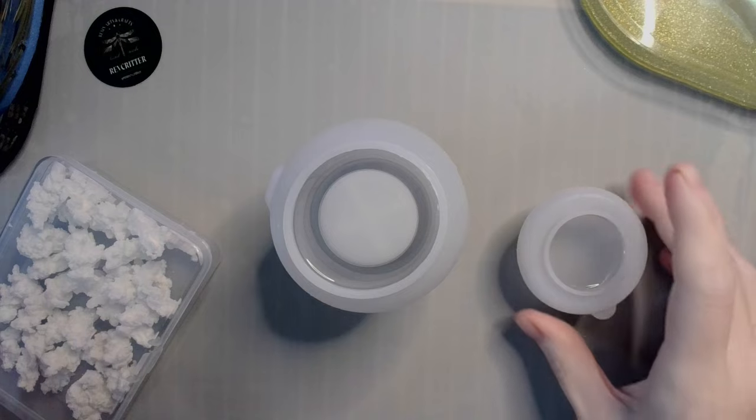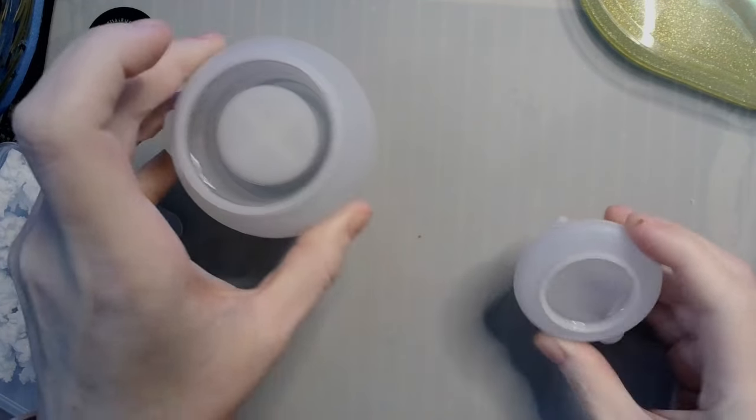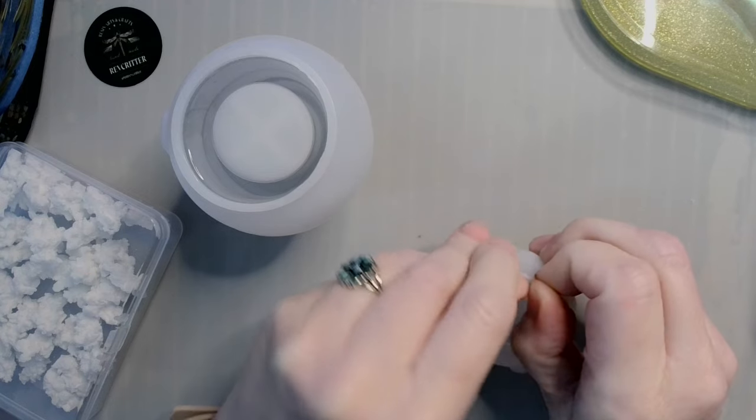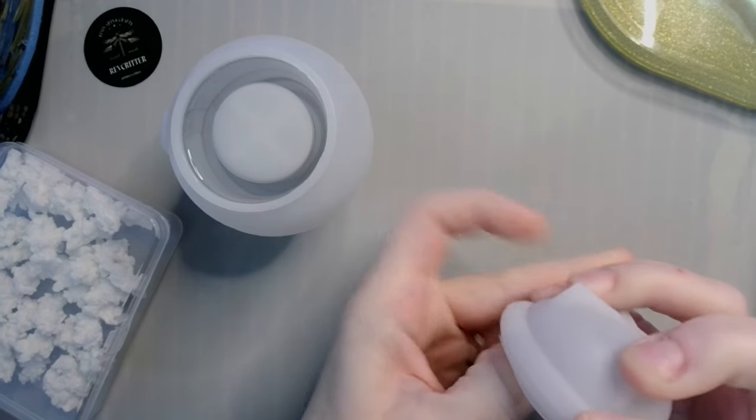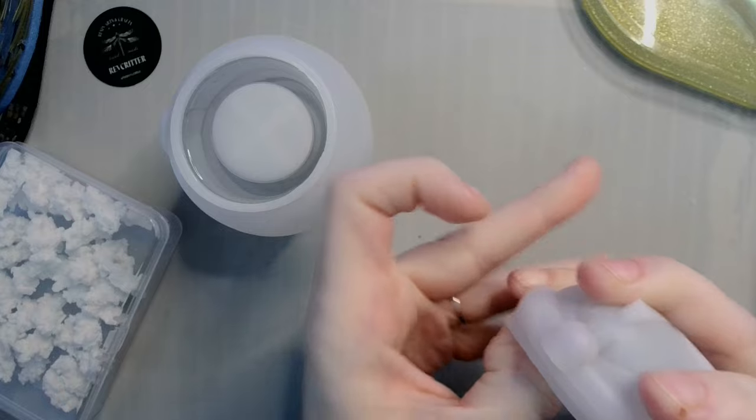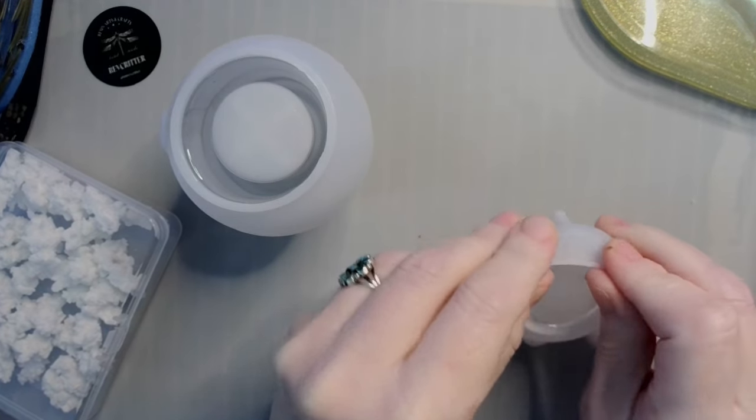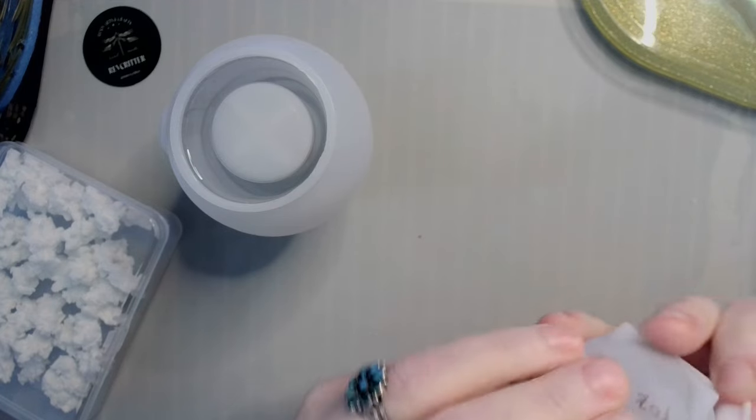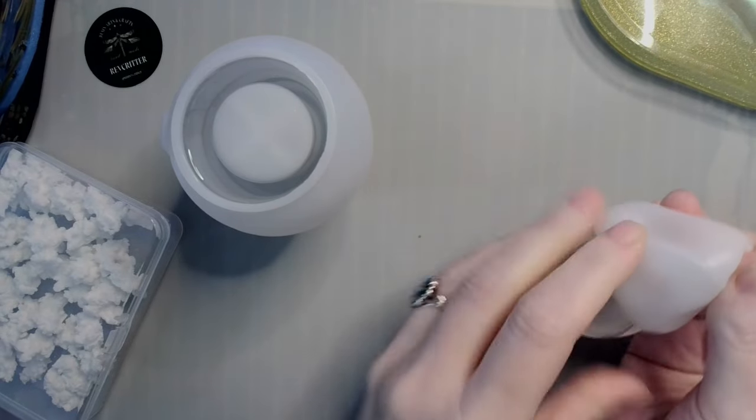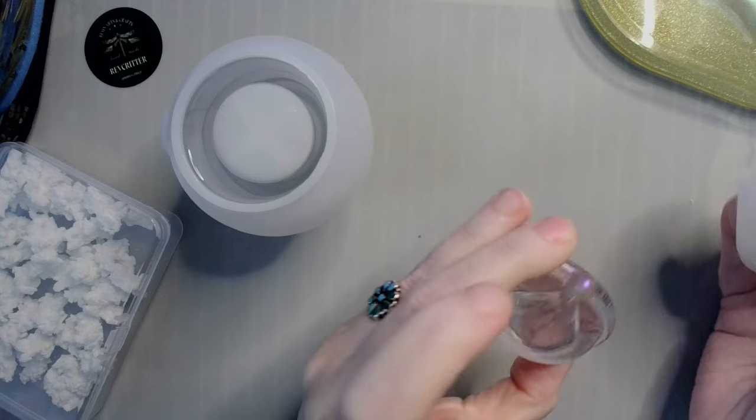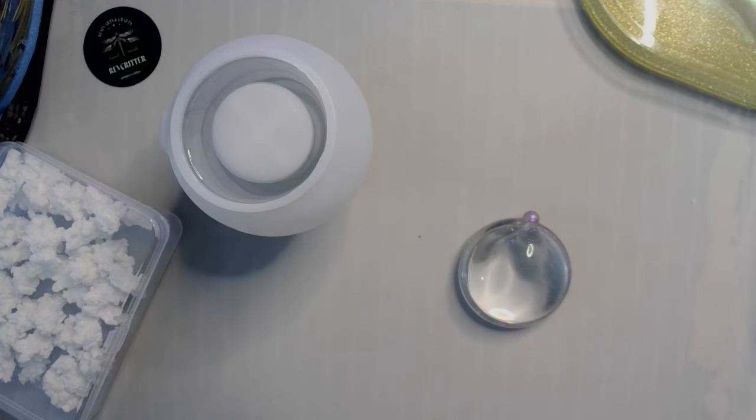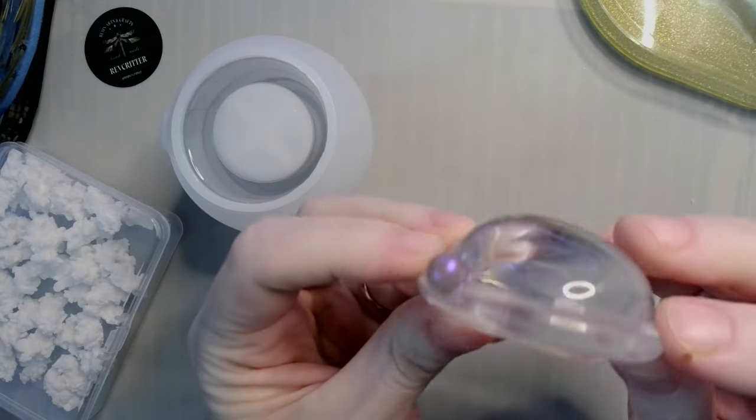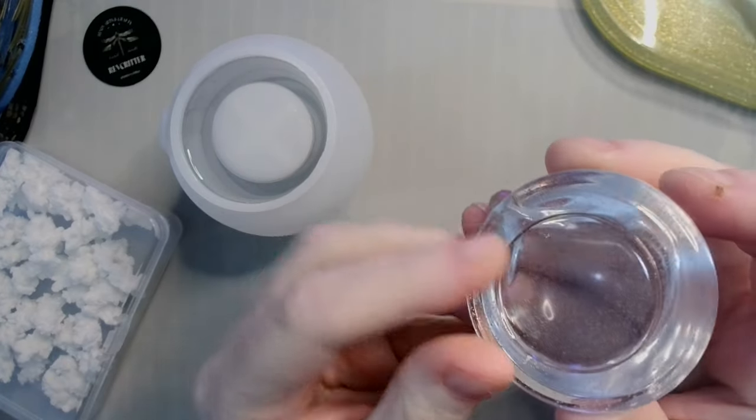Alrighty. So it is time to demold. So let's do that, shall we? We'll start with our hat. Kind of snow hat. Got some bubbles around the rim, but that's okay because you're really not going to see that part. All cute. Here's your little hat. That's very cute.